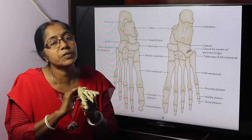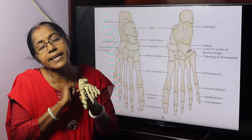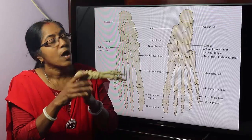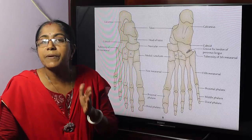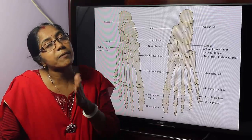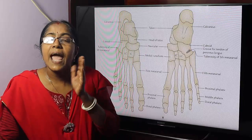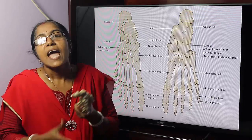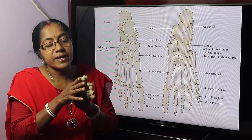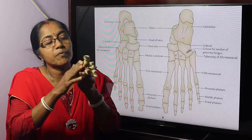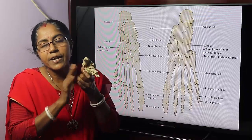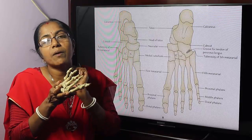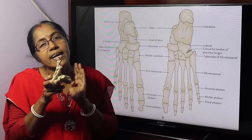What are the joints between the tarsal bones? Between the talus and calcaneum there is the posterior talocalcaneal joint. What movements take place in this joint? Inversion and eversion. Inversion is a movement in which the medial border of the foot is raised and the sole is directed medially. Eversion is a movement in which the lateral border of the foot is raised and the sole is directed laterally.